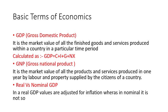Then we have GDP, or Gross Domestic Product. It is the market value of all the finished goods and services produced within the country in a particular time period. GDP is calculated as C plus I plus G plus NX, where C is private consumption, I is investments, G is government spending, and NX is net trade.